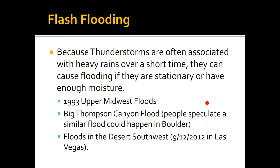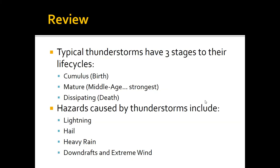To wrap up today's lecture: typical thunderstorms have three stages to their life cycle — cumulus, mature, and dissipating. Some of the hazards created by thunderstorms include extreme winds, lightning, hail, and heavy rain, and these are just ordinary thunderstorms. In the next lecture, I'm going to be talking a lot more about what are called severe thunderstorms. Until then, I'm Terrence Mullins — thank you for watching.